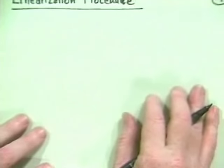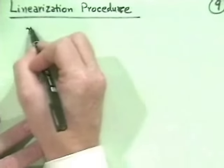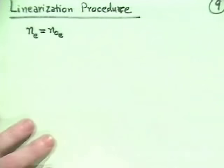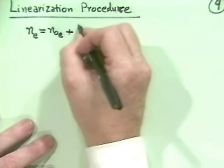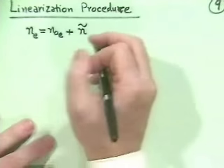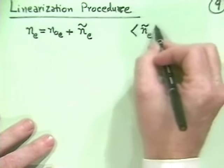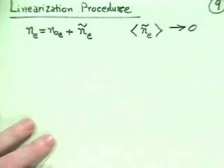So, for the linearization procedure. What we basically want to say with the linearization procedure is that the electron density is, in fact, some equilibrium electron density N0 sub E. But then there's some perturbation about that, N tilde. And in some sense, if I took an average of N tilde over some length or some time, that goes to zero.